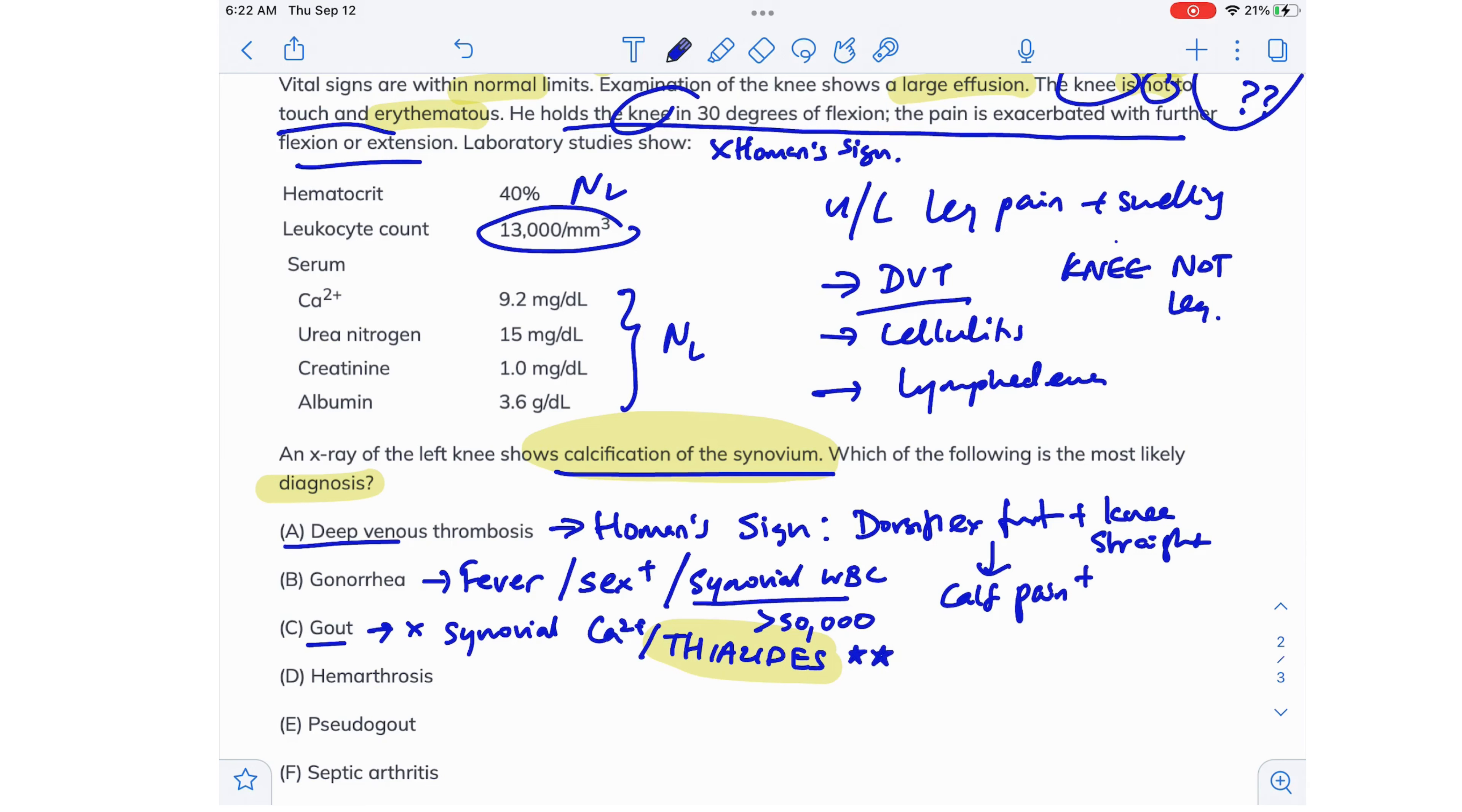Option D, hemarthrosis. Yeah, this can't be hemarthrosis because hemarthrosis is common in patients with ACL tears. When you tear your ACL, you can start bleeding into your knee joint. ACL tears are common in football players because it happens when you suddenly twist your knee. So this can't be hemarthrosis.